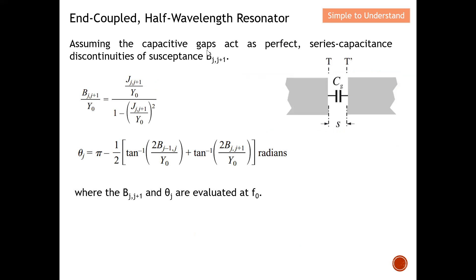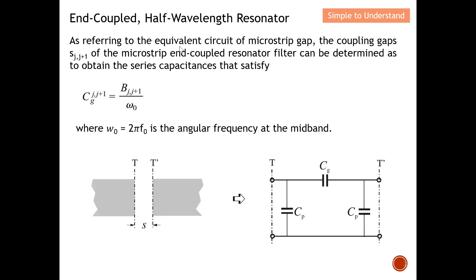Next, assuming the capacitive gap as a perfect series capacitor — the susceptance here is an important parameter. This will be Equation 5. What this means is that this gap can be represented as a perfect series capacitor by this value, and the susceptance and beta_j are evaluated at f0, which is the midpoint frequency of the bandpass filter.